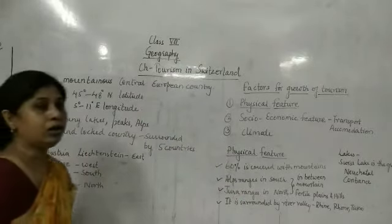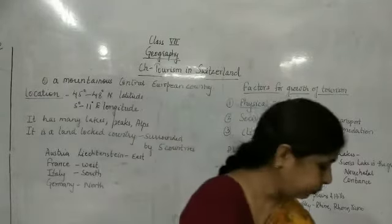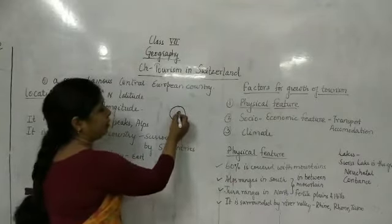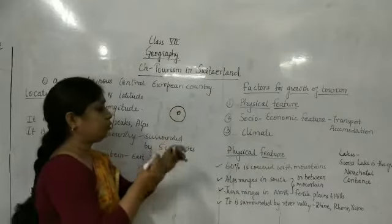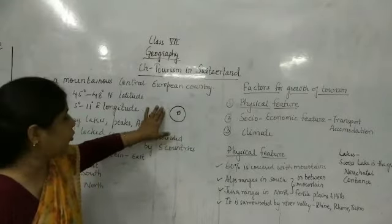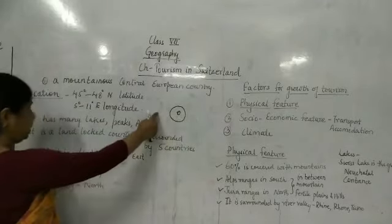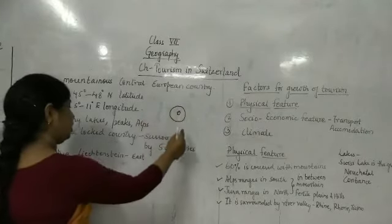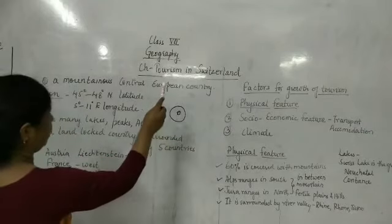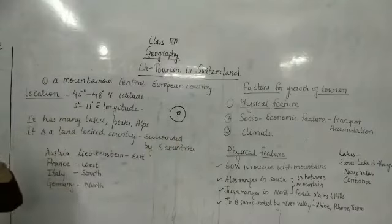It is a landlocked country, meaning it is surrounded by land on all sides. It is in central Europe and is surrounded by five countries: Austria in the east, France in the west, Germany in the north, and Italy in the south.